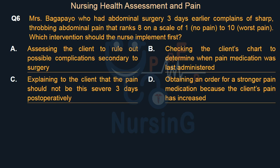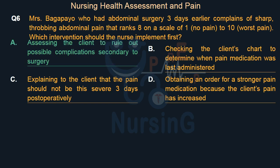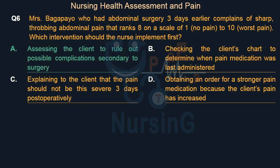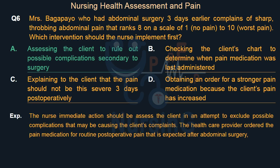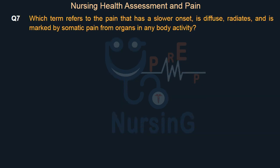The right answer is Option A: Assessing the client to rule out possible complications secondary to surgery. The nurse's immediate action should be to assess the client in an attempt to exclude possible complications that may be causing the client's complaints. The healthcare provider ordered the pain medication for routine post-operative pain that is expected after abdominal surgery.